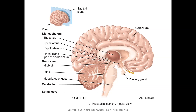The pons are expanded structures located superior to the medulla oblongata and anterior to the cerebellum. They have respiratory centers that assist the medulla oblongata in controlling breathing. Remember, we have about 100 billion neurons and 100 trillion connections, so everything is connected. The pons also relays information from the diencephalon to the cerebellum, so there are connections between those structures that travel through the pons.